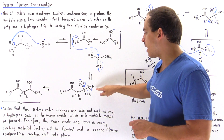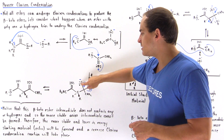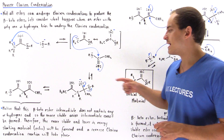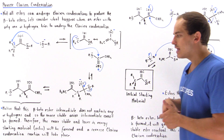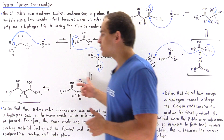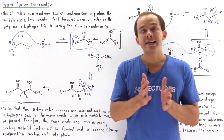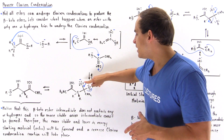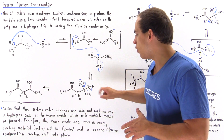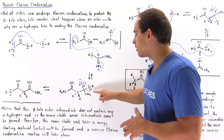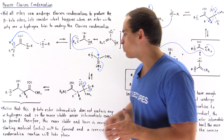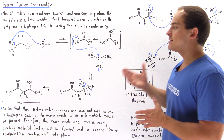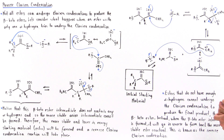We kick off the pi bond, placing the two electrons onto our oxygen to form the tetrahedral intermediate. In the third step, the elimination reaction takes place in which the pi bond is reformed and we kick off the alkoxide leaving group to produce the beta-ketoester intermediate.